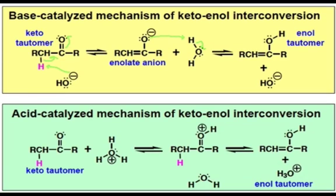A key difference between these two mechanisms is the intermediates through which the mechanism proceeds. The base-catalyzed mechanism proceeds through the enolate anion, wherein the acid-catalyzed mechanism proceeds through a simple protonated carbonyl group.